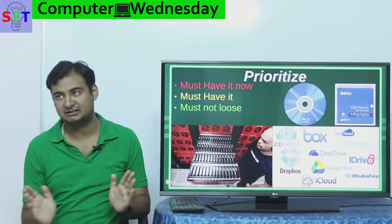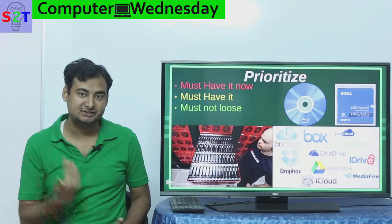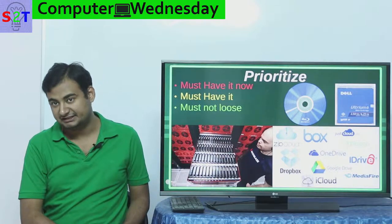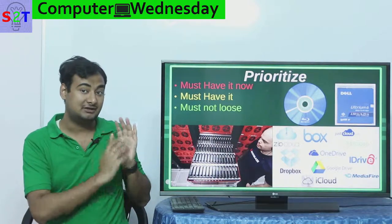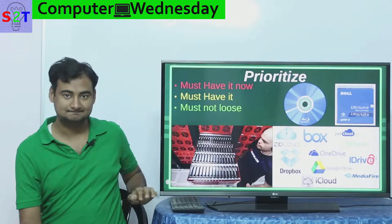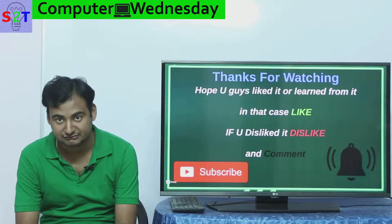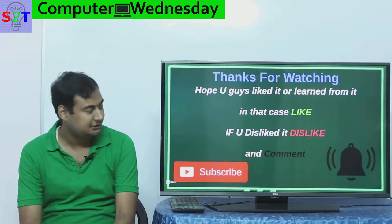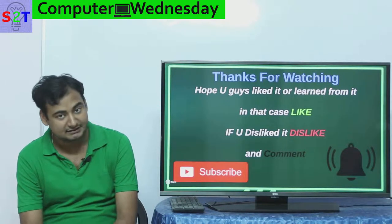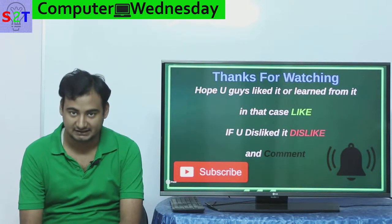All things considered, please prioritize your data. Not every piece of data needs to be on your mirror server, and not everything needs to be archived. Prioritize on three criteria: must have it now, must have it, and must not lose it. I hope you liked and learned from this video. If so, please leave a like; if not, leave a dislike and a comment on what you want to see next on Computer Wednesday. If you've watched this far, please subscribe — and as always, thanks for watching.